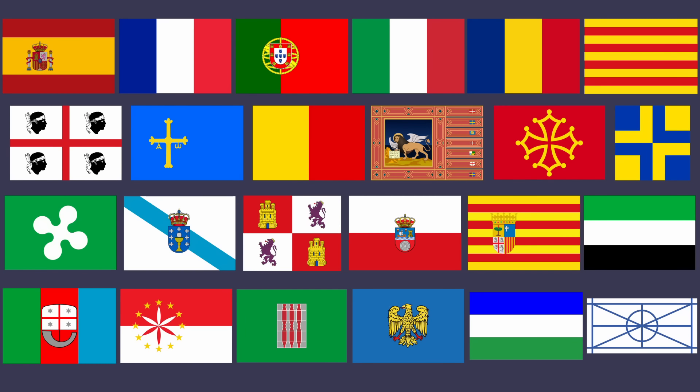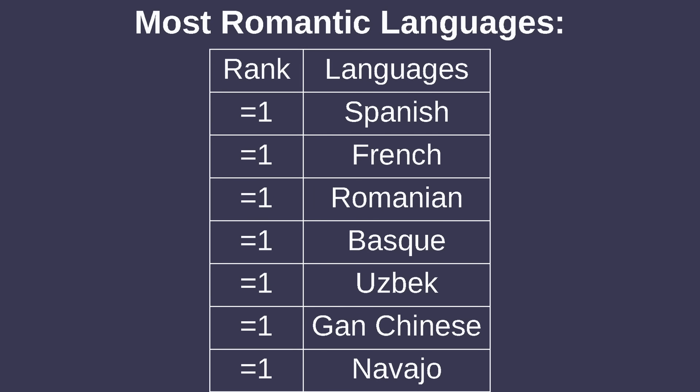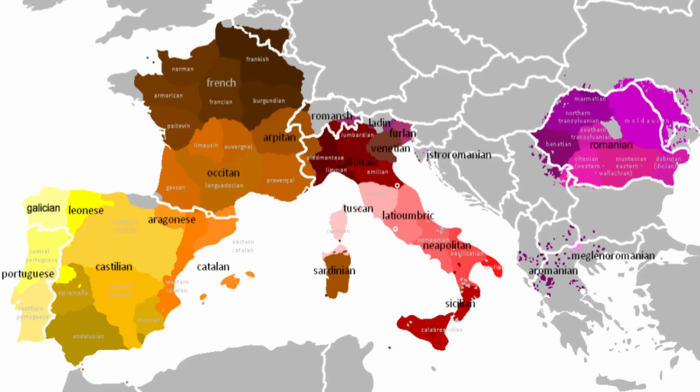The Romance languages are the most romantic languages of all, in the sense that every language in the world is tied for being the most romantic. In all seriousness, the Romance languages are a subfamily within Indo-European, native to Europe, primarily in the southern half of the continent.